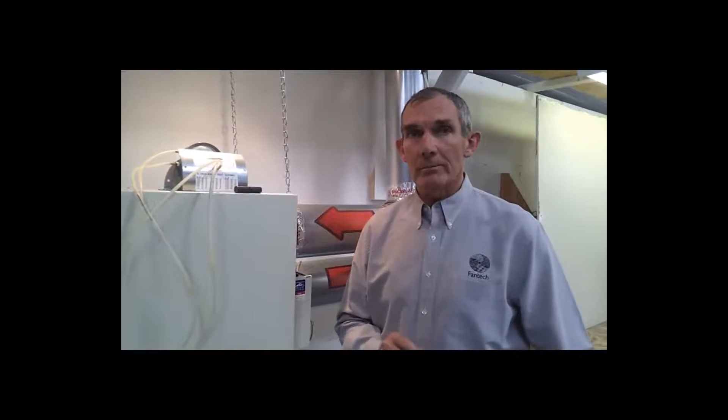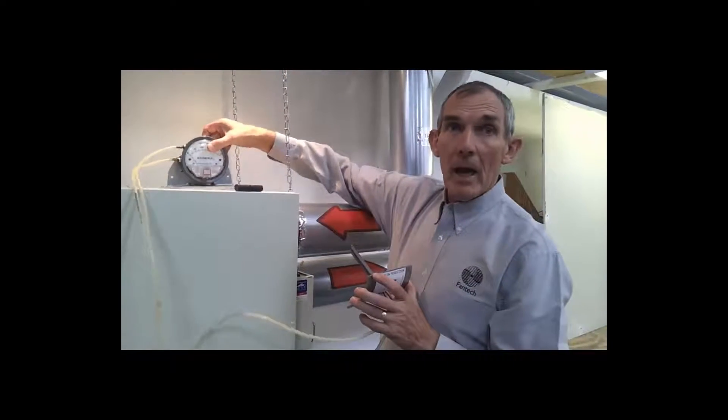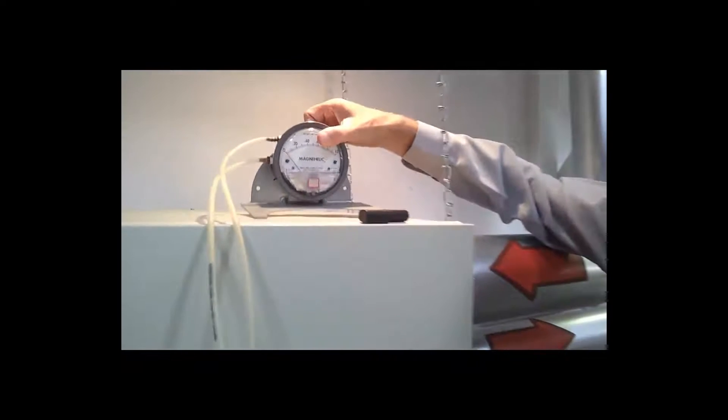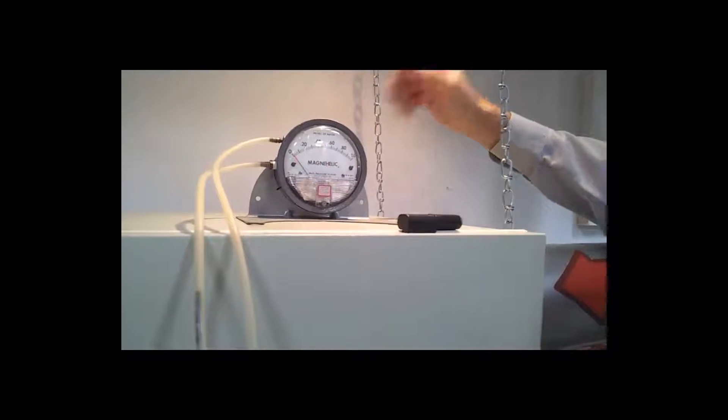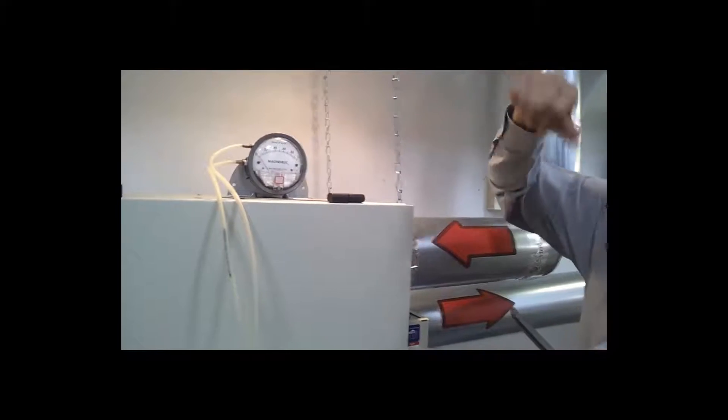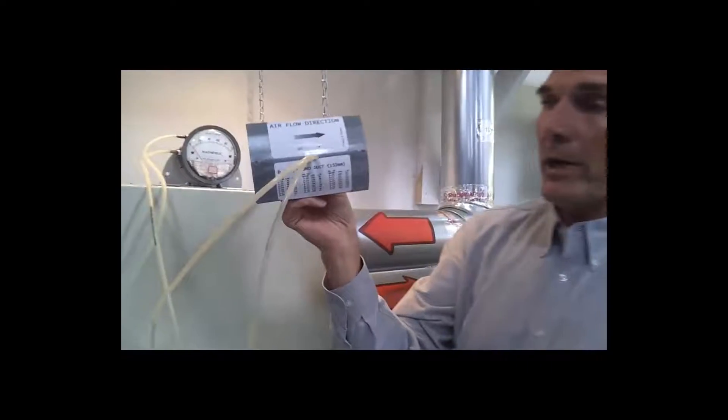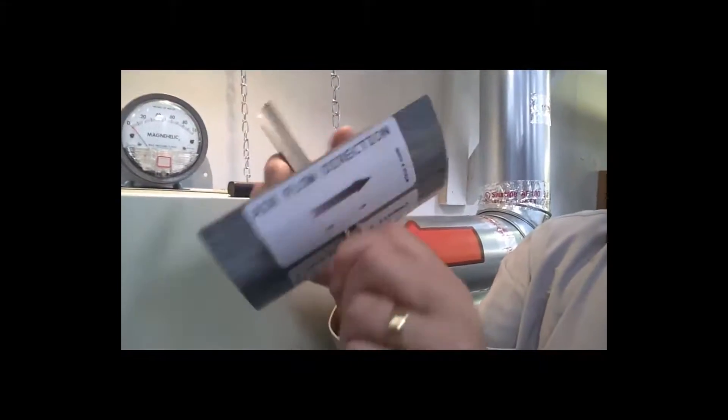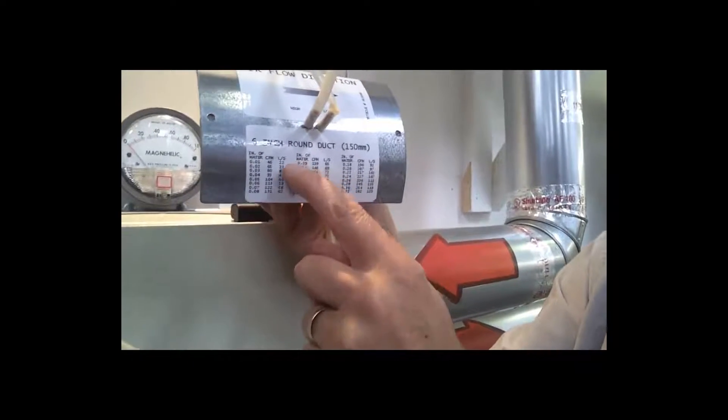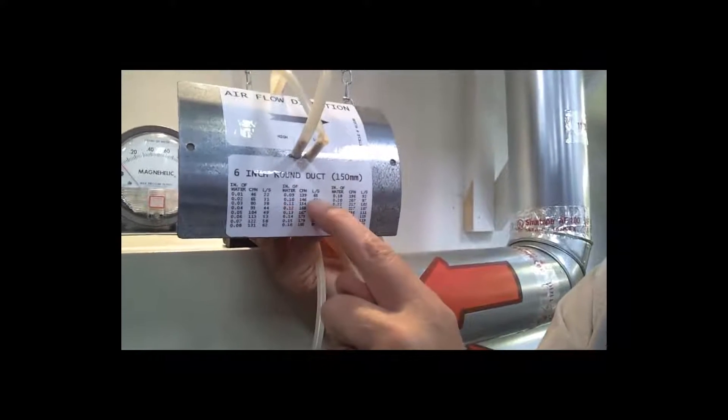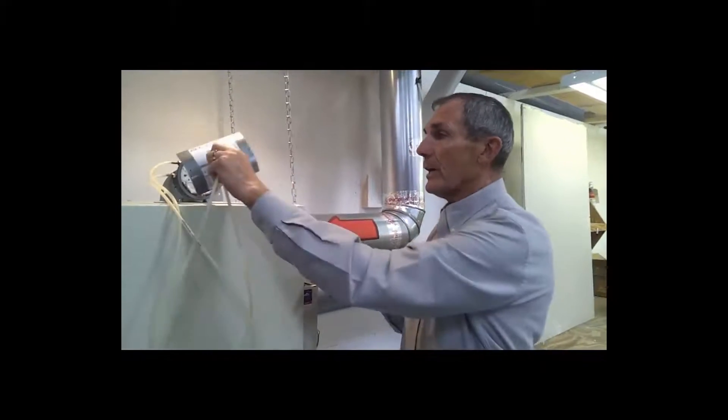Okay, the two things we're going to use to balance this system: we're going to use a magna helic gauge which you make sure is on a level surface, and a grid airflow insert. The good thing about this is you can read the pressure in the duct, and also it'll give you the air flow at that pressure.